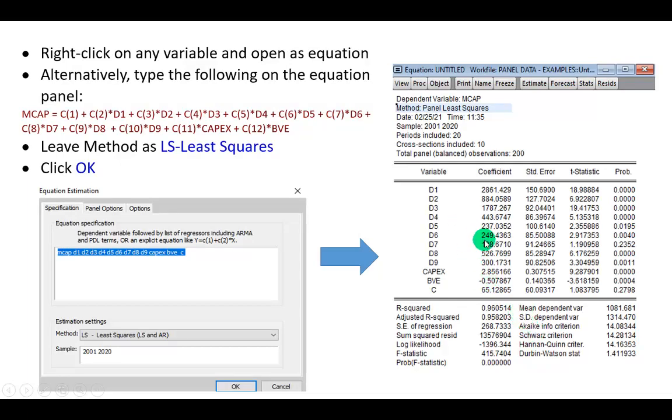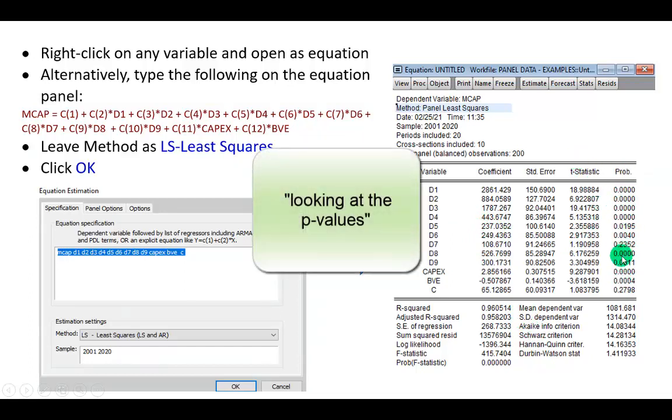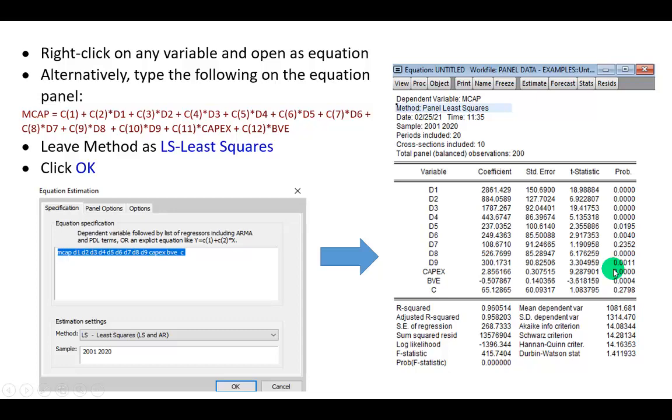Going back here, heterogeneity appears to be present because, as you can see, the dummy variables are pretty much all statistically significant, looking at their F values, suggesting that fixed effects model may be more reliable than pooled OLS, and we're quite happy about that.